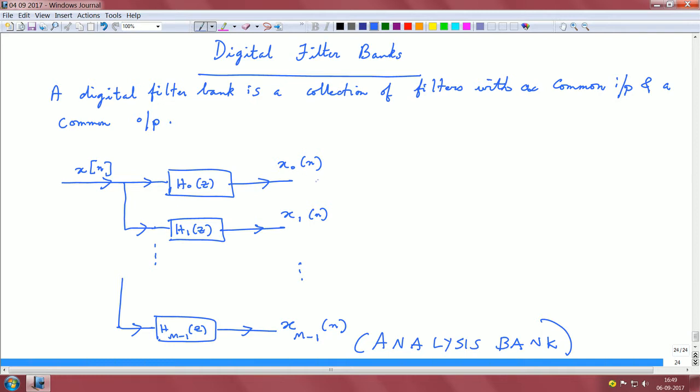And these signals x naught of n, x 1 of n, so on till x m minus 1 of n, they are called sub band signals. And the name is pretty intuitive and obvious, they are called sub band because you are filtering them in different frequency bands. And this is why they are called sub band filters.